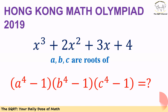Knowing that a, b and c are roots of this expression, we want to find (a to the power of 4 minus 1) times (b to the power of 4 minus 1) times (c to the power of 4 minus 1). Before moving forward, make sure that you pause the video to think about this problem.